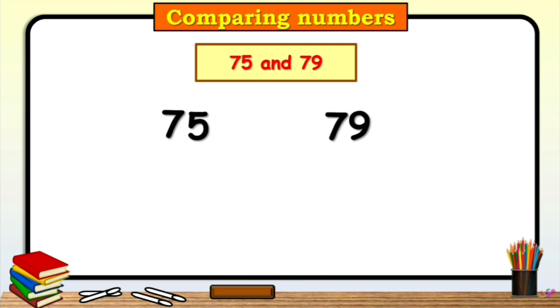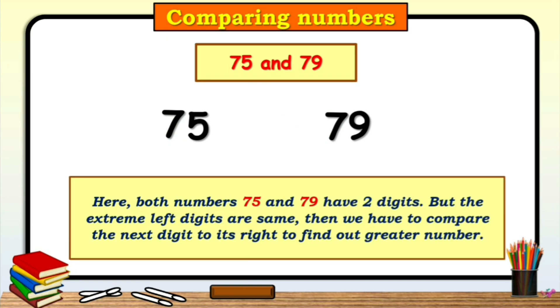Now, let's compare 75 and 79. Did you notice, children? Here, both numbers have the same number of digits. And the leftmost digits are also same. So, in this case, what we have to do? We have to compare the next digit to its right to find out greater number.